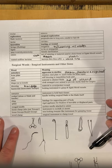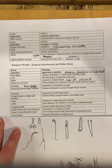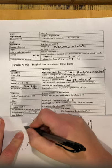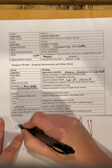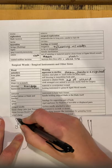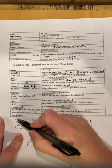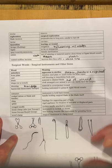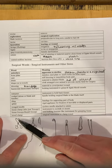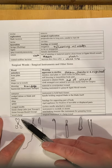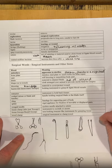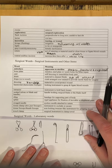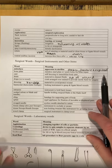A towel clamp is a surgical instrument used to clamp towels. These also look like hemostats, but their tips curve inward and are very sharp — so be careful not to get poked, because they will hurt. They need to be sharp because they have to go through all the draping and attach to the animal's skin during surgery.